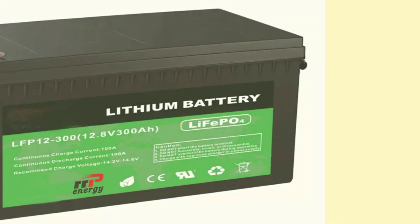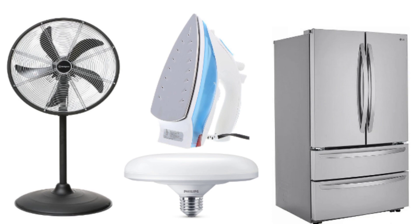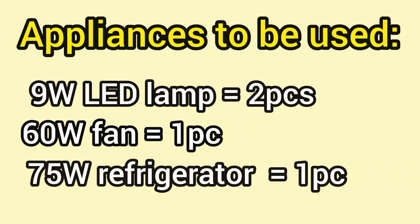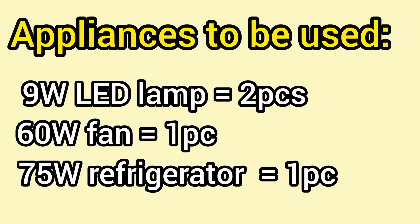To be able to calculate the load demand of the system, we'll look at the various appliances in that household that will need to be supplied electricity on a daily basis. For this small household, let's assume that we have two LED lamps rated 9 watts each, a fan rated 60 watts, and a refrigerator rated 75 watts. So basically, we have two lamps, one fan, and one refrigerator.